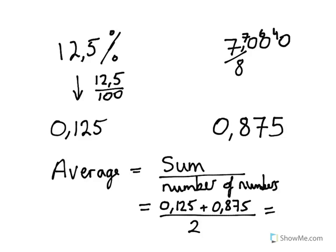We can see quite easily that 0.875 plus 0.125 gives us 1, and 1 divided by 2 gives us 0.5.